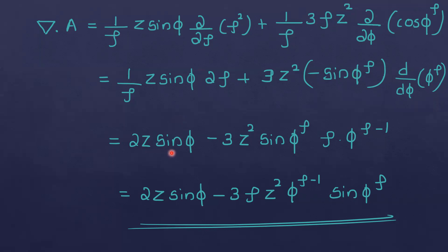The φ term evaluates to 2z sinφ minus 3z squared sinφ to-the-power-ρ. Applying the chain rule: d by dφ of φ to-the-power-ρ equals ρ times φ to-the-power-(ρ minus 1). So the final result is: 2z sinφ minus 3ρz squared φ to-the-power-(ρ minus 1) sinφ to-the-power-ρ.